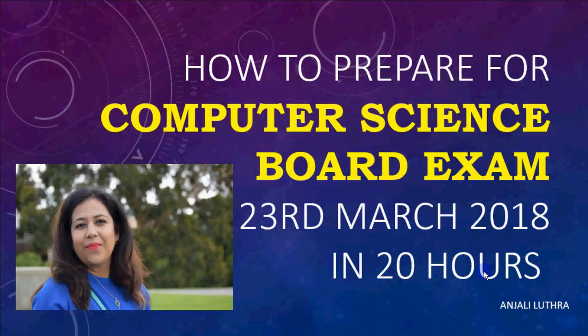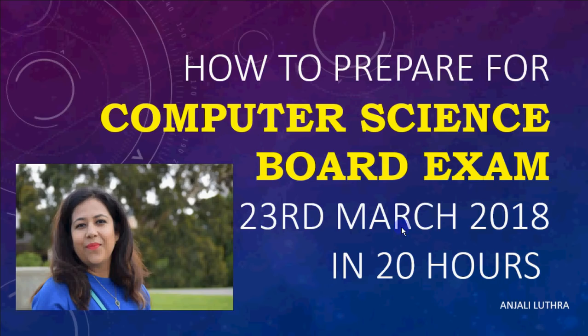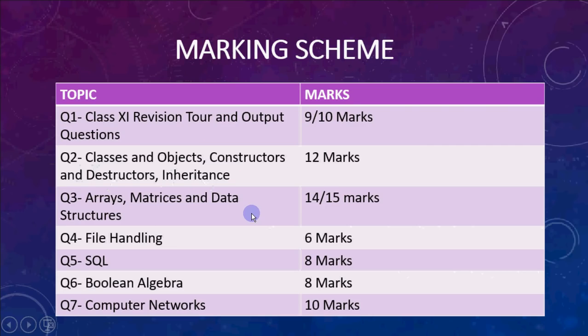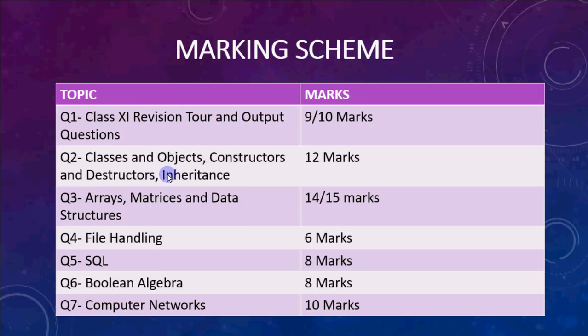This is the final revision you have to do here. Your theory exam is totally for 70 marks and you have seven questions in the paper. This particular video is for C++; I'm not explaining Python in this video. Section B is the same for both C++ and Python students.